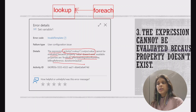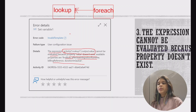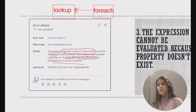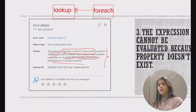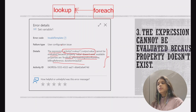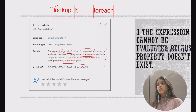This error is not only in the case of lookup activity — if you try to refer to any previous activity and do not write the expression correctly to retrieve its result set, you may get a similar error. The available properties may change from activity to activity. In this video, we will use lookup activity for demo purposes, but you may apply the same workaround to other activities as well.